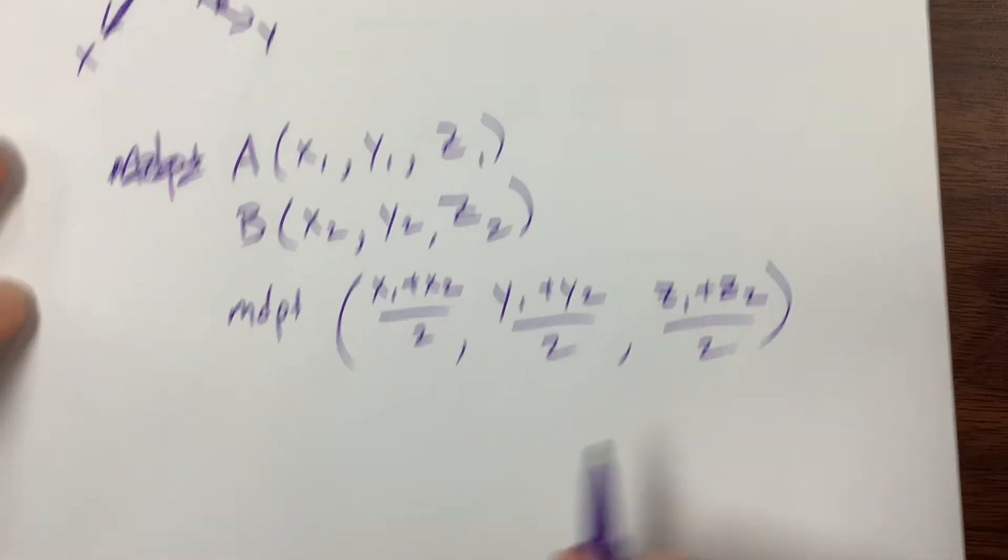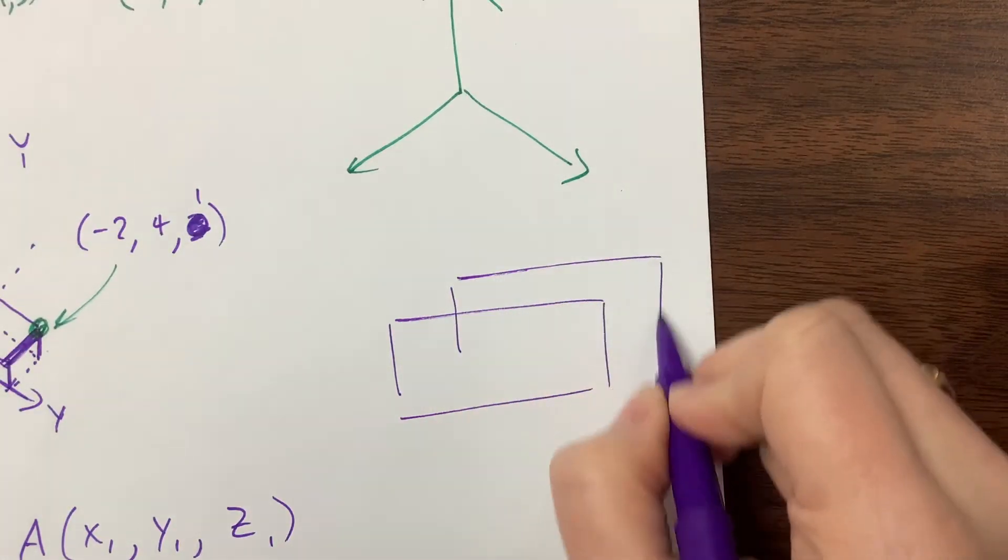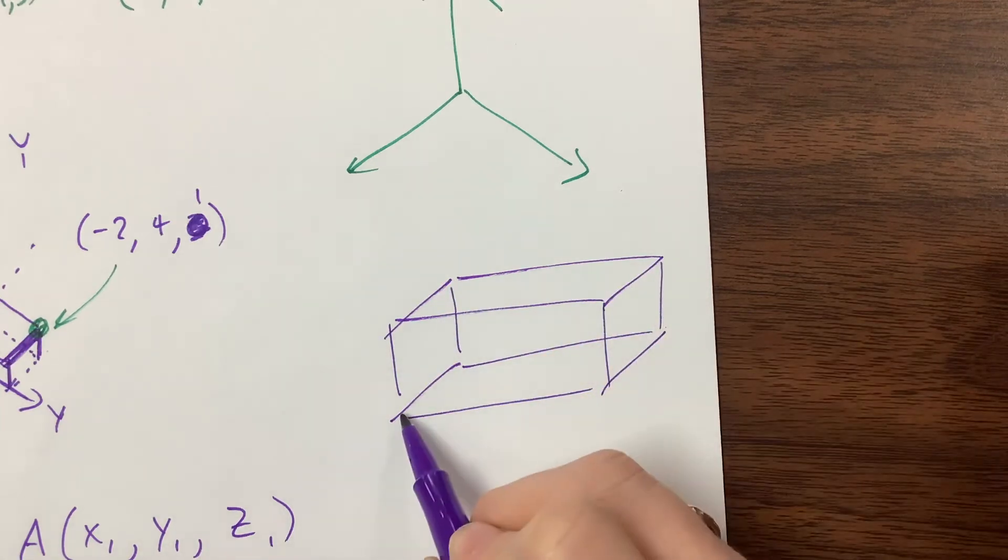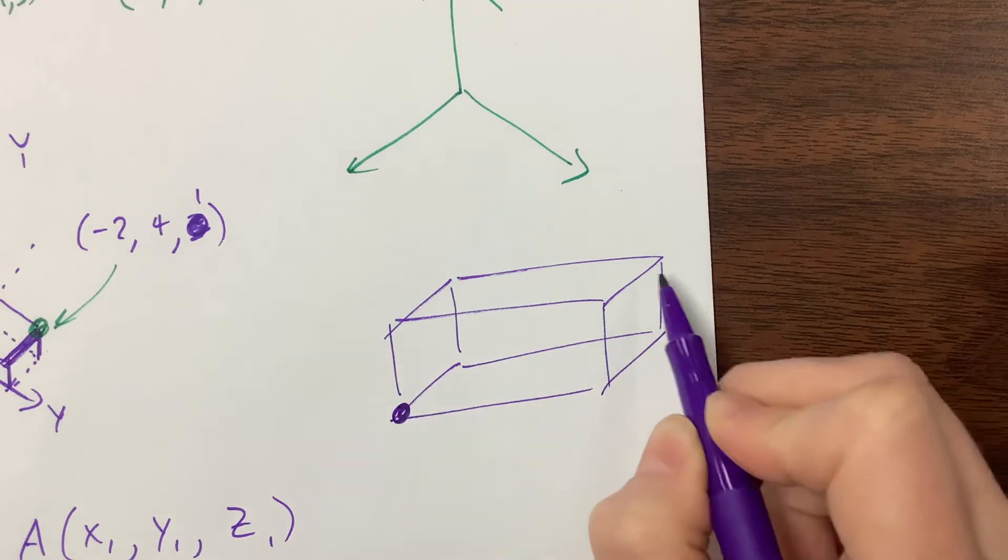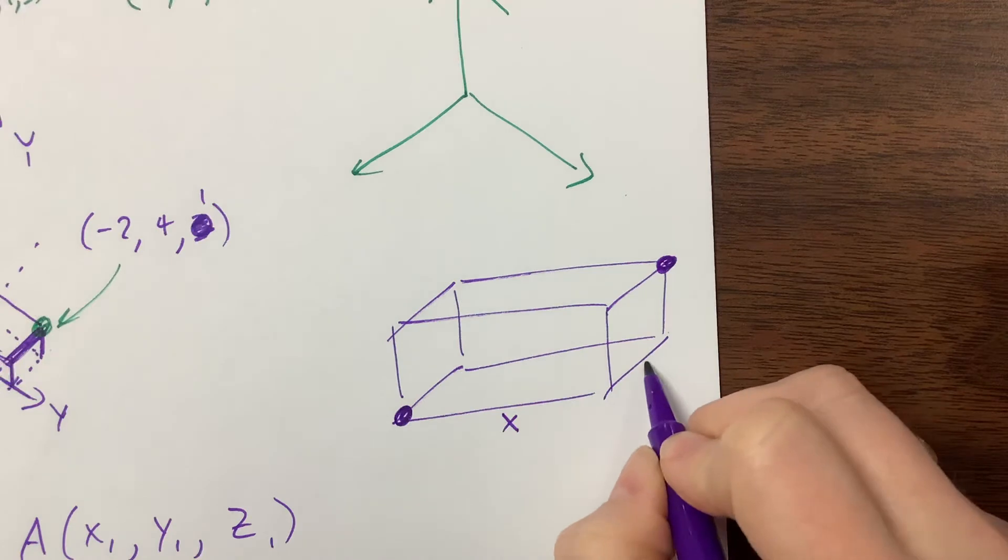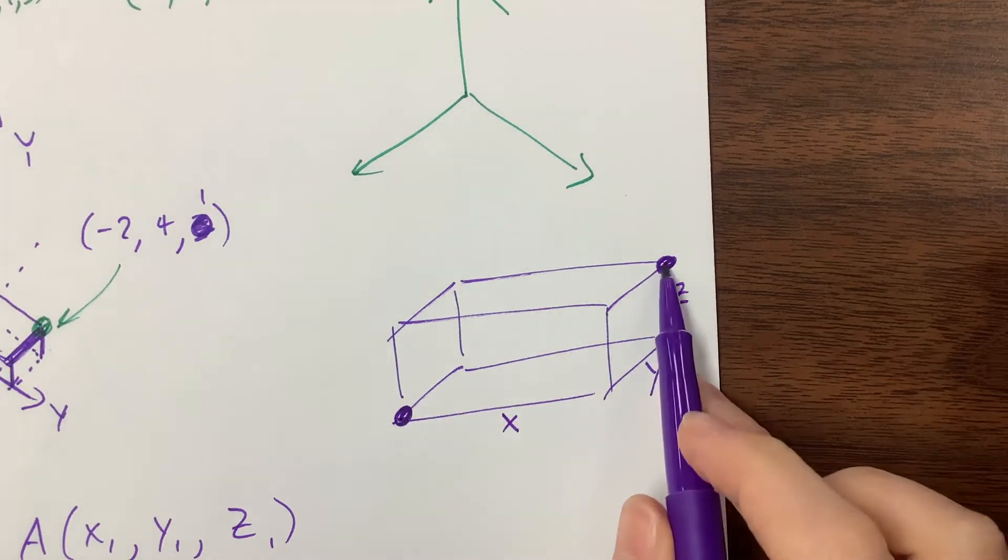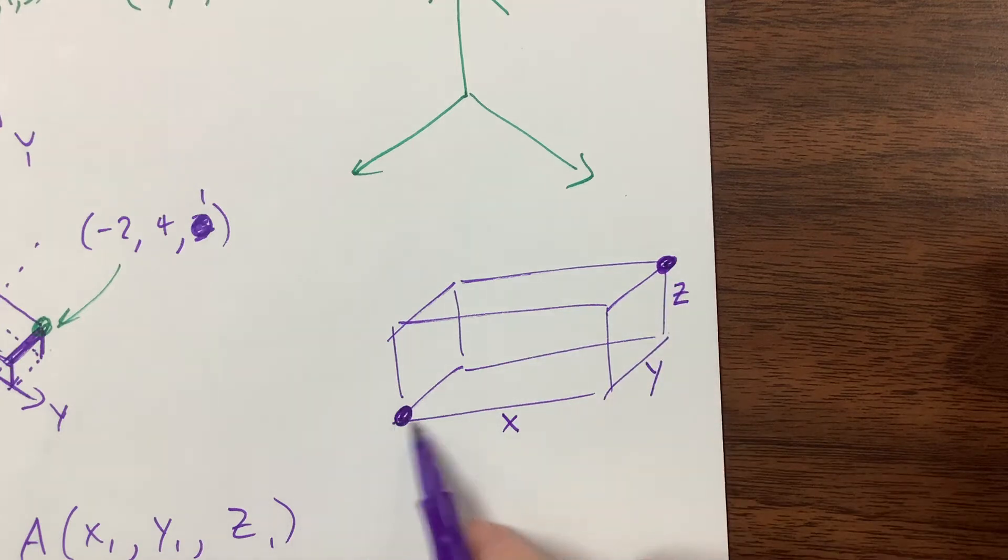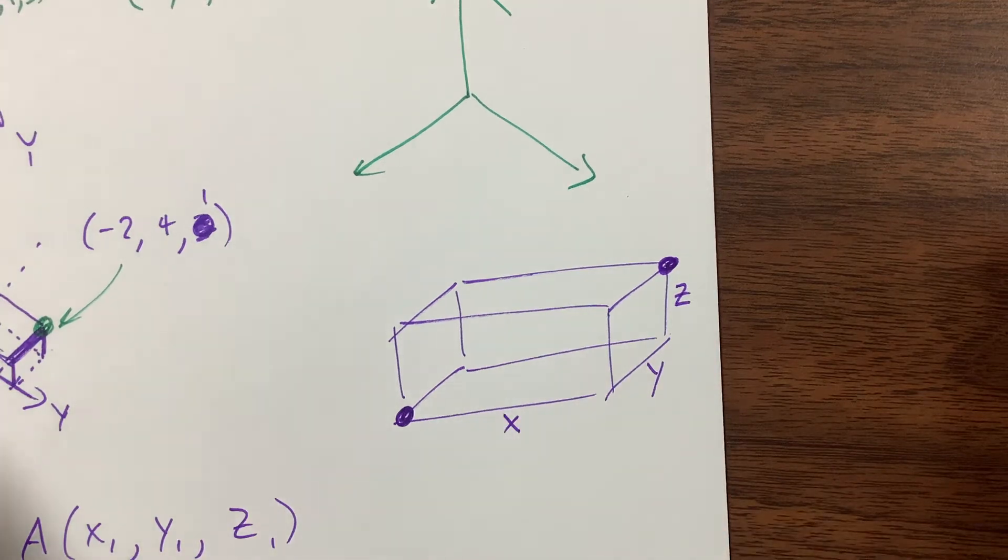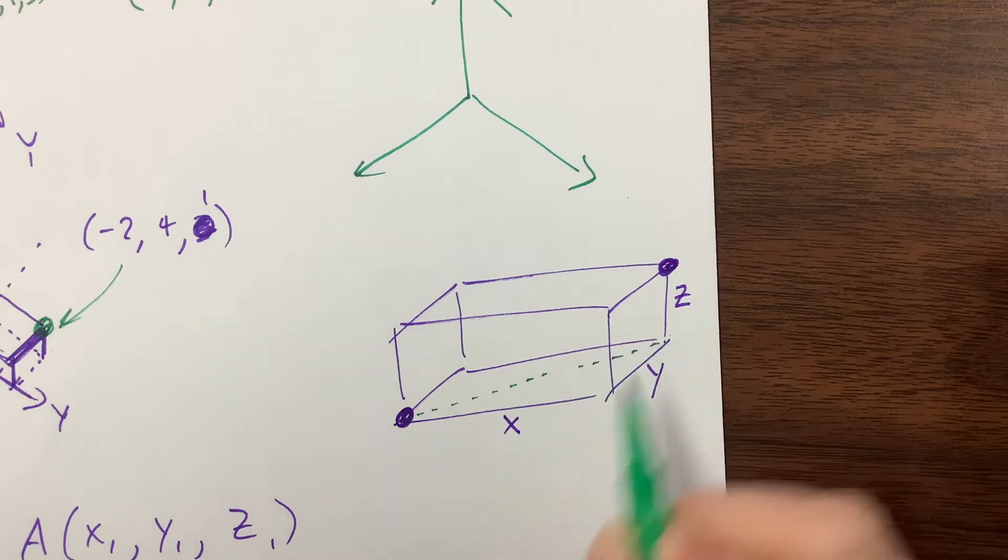If I want to find the distance formula, if I have this rectangular prism, I've got two random points. Let's say I've got this point here and this point here. Let's say that this dimension is x, this dimension is y, and this dimension is z. Then in order to get from this point here to this point there, what I have to do is I have to go x units this way, y units that way, and z. The distance between them, well, notice that there's a right triangle down on the base.